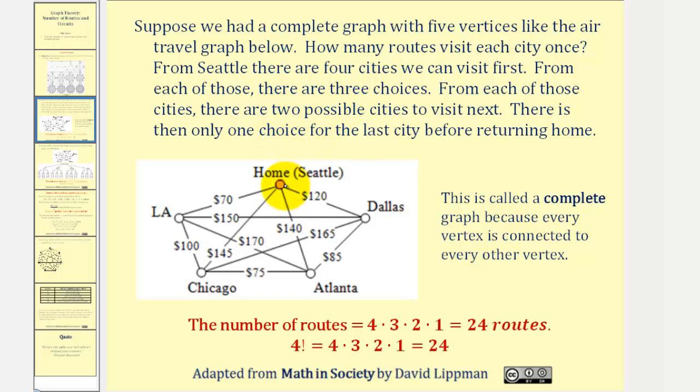notice how there are four choices or four cities we can visit: LA, Chicago, Atlanta, and Dallas. So when determining the number of routes, we're going to find a product where the first factor in this case would be four.